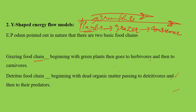But then ecologist Odom came and said that in nature actually there are two basic food chains: one is the grazing food chain, and the next is the detritus type of food chain. So now you know there are two basic food chains.